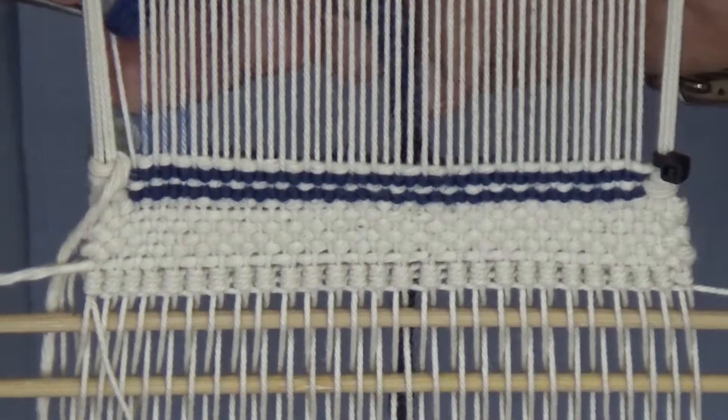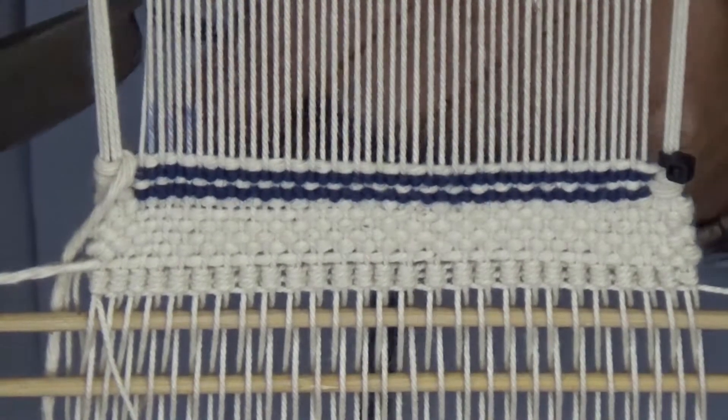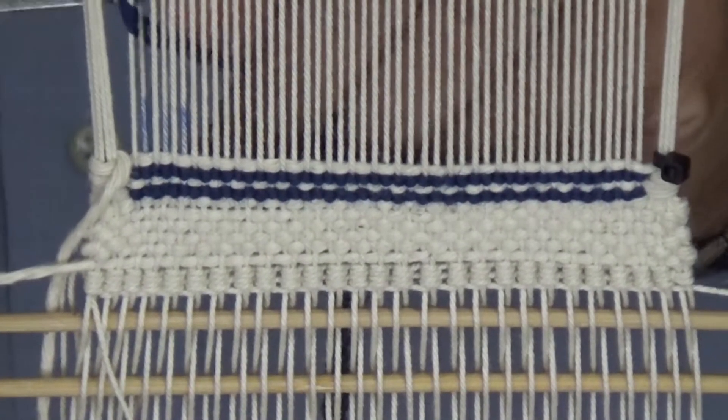I've completed two rows. Here's the back of the loom to help you see a different view of the knots as they're being added.